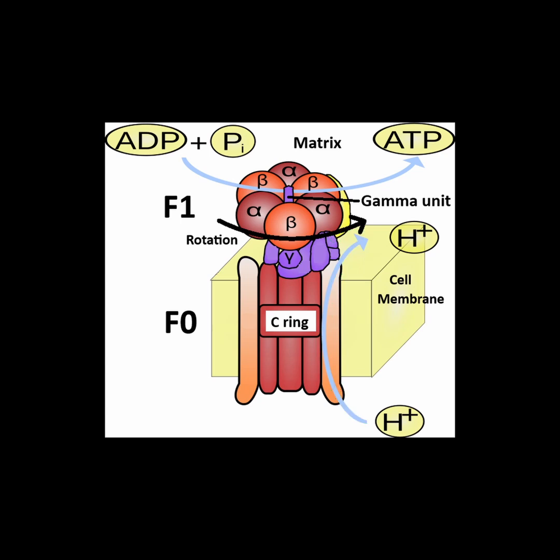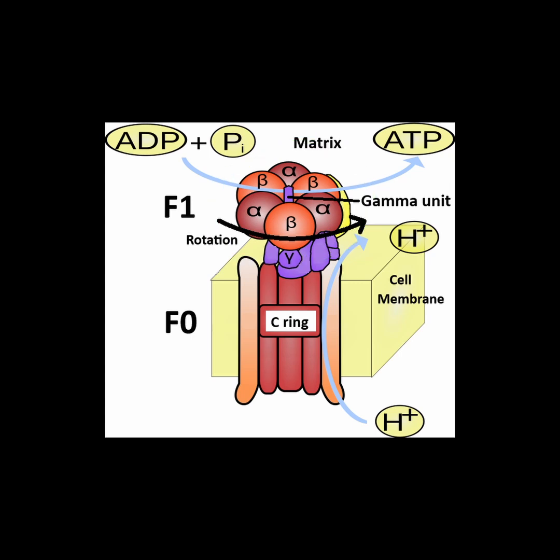When a proton enters the passage, it loads the C-ring in F0, triggering the rotation. This turning action causes conformational changes in the head of F1, meaning that parts of the head change shape to manufacture the ATP molecules.